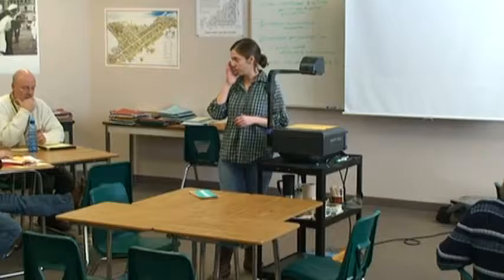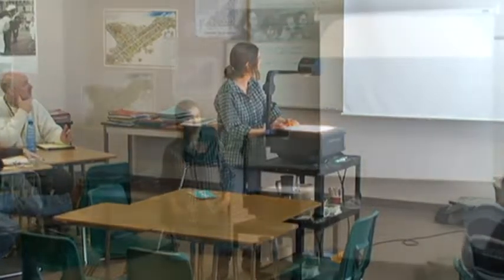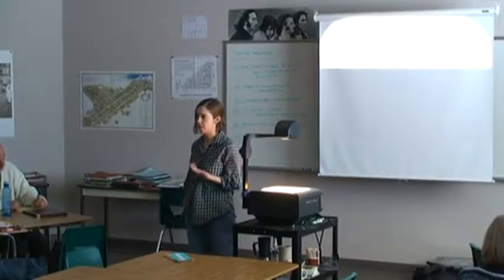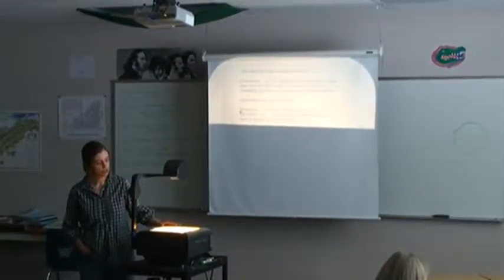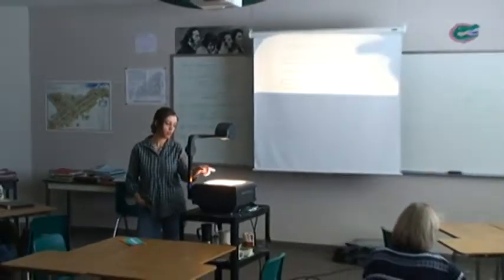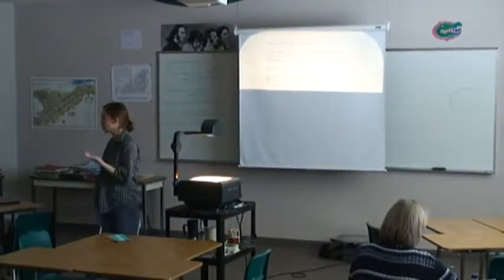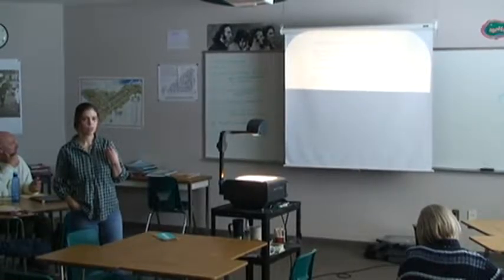The first thing I'll ask you to do, which I also ask my students to do, is to copy down a couple of definitions. The first definition is for connotation — the implied meaning of a word. The second is denotation, and the useful definition here is: a direct, specific meaning as distinct from an implied or associated idea. To distinguish between the two, think of the D in denotation as standing for dictionary.